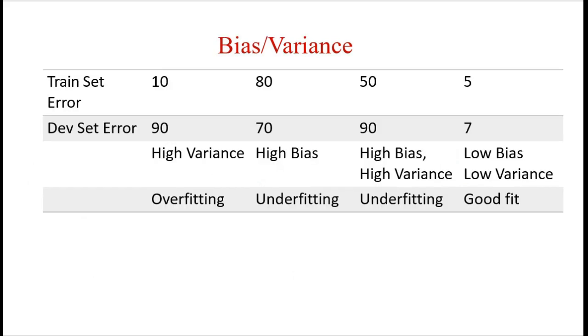Now let's check out some examples. If the training error is 10% and development set error is 90%, then the error introduced in the dev set is very high compared to the 10% in training. So it is high variance.